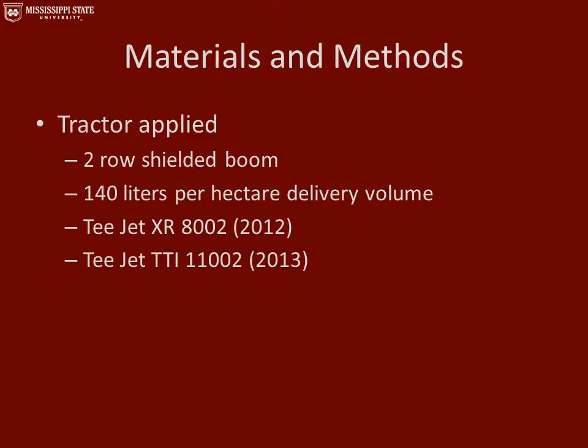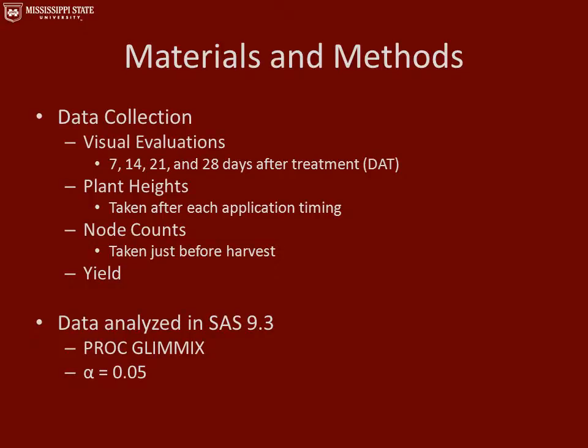All applications were applied using a two-row shielded boom with a delivery volume of 140 liters per hectare, which is equivalent to 15 gallons per acre. In 2012, we used the T-Jet XR 8002 spray tips, and in 2013, we used the T-Jet TTI 11002 spray tips. The data collected were visual evaluations at 7, 14, 21, and 28 days after treatments were made. We also collected plant heights after each application timing, as well as node counts, and then collected yield and determined yield reduction. All data was analyzed in SAS 9.3 under Proc Glimmix with a significance level of 0.05.